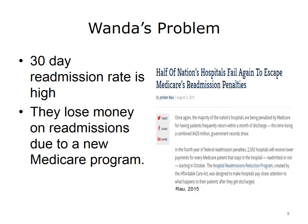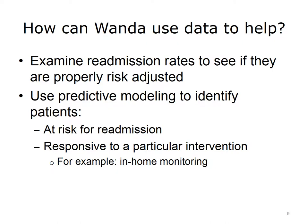The current problem Wanda is facing is that the health system's 30-day readmission rate is high. HealthWest will pay a penalty due to a new Medicare program that doesn't pay for readmissions that occur within 30 days of discharge. She needs to see what decisions are being made and what analytics could be useful. First, she might want to examine the 30-day readmission rates to see if they've been properly risk-adjusted. Next, she could generate a predictive model to identify patients who are at risk for readmission. The health system has an in-home monitoring program that could be deployed, but deploying it unnecessarily is wasteful. Instead, she'd like to use the program only for those who are at risk.